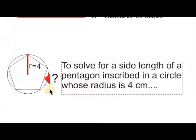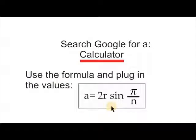To solve for the side length of a pentagon inscribed in a circle whose radius is 4 centimeters, search Google for a calculator, use the formula, and plug in the values.